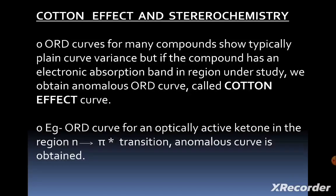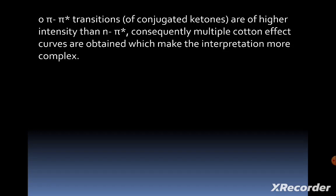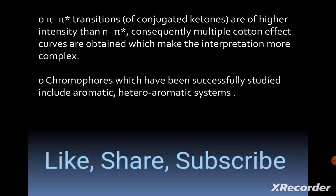Cotton effect and stereochemistry: ORD curves for many compounds show typically plain curve behavior, but if the compound has an electronic absorption band in the region under study, we obtain an anomalous ORD curve called a cotton effect curve. For example, the ORD curve for an optically active ketone in the region of the n-to-pi-star transition gives an anomalous curve. Pi-to-pi-star transitions of conjugated ketones are of higher intensity than n-to-pi-star transitions; consequently, multiple cotton effect curves are obtained, making interpretation more complex. Chromophores that have been successfully studied include aromatic and heteroaromatic systems.